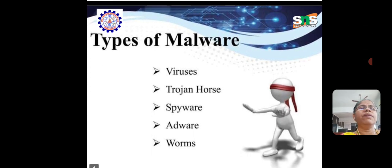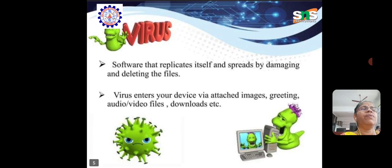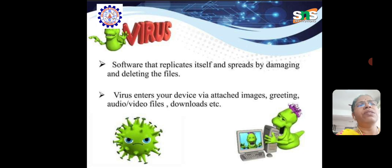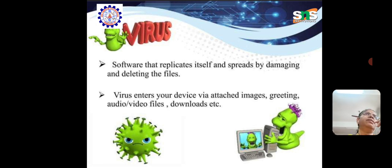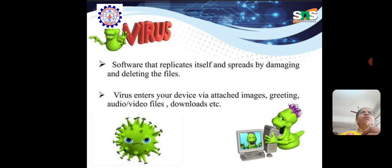Types of malware — we already discussed viruses, Trojan horses, spyware, adware, and worms. We will discuss them one by one. The first one is virus. Just like a biological virus enters the human body and damages our immune system, in computer systems a virus is software that replicates itself and spreads by damaging and deleting files.